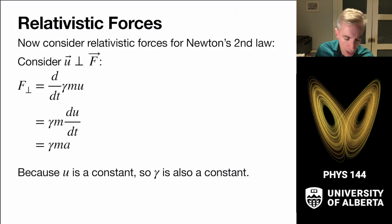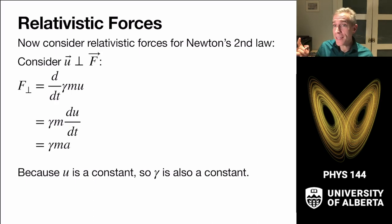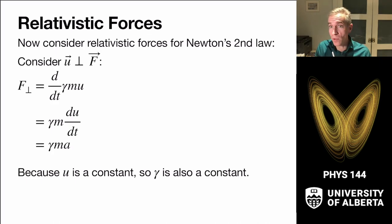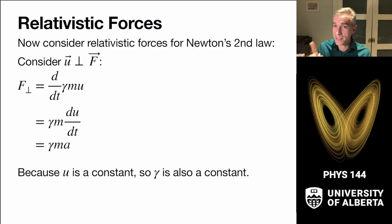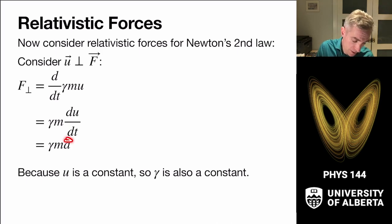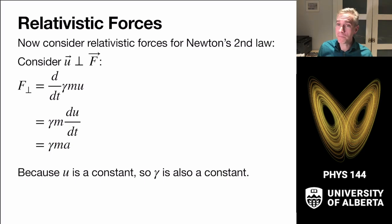For forces perpendicular to the velocity — like circular motion — the speed u in the denominator doesn't change. These are normal accelerations that change direction but not speed, so the denominator is constant. Taking the time derivative gives just γma. So the parallel component of force leads to F = γ³ma, while the perpendicular component gives F = γma — a distinctly different relationship. So now we know how forces relate to accelerations relativistically.